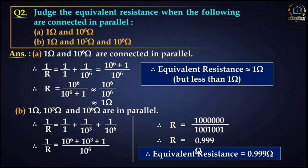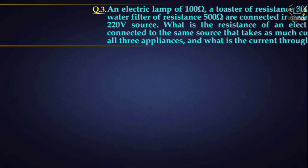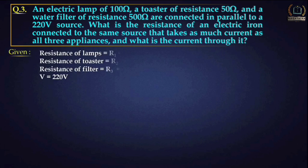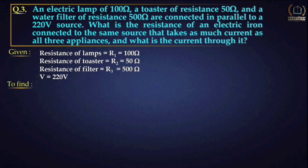Question number three: an electric lamp of 100 ohm, a toaster of resistance 50 ohm, and a water filter of resistance 500 ohm are connected in parallel to a 220 volt source. What is the resistance of an electric iron connected to the same source that takes as much current as all three appliances, and what is the current through it?